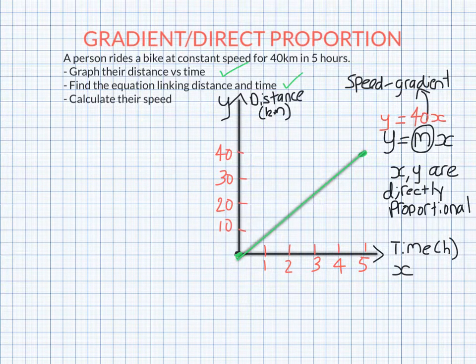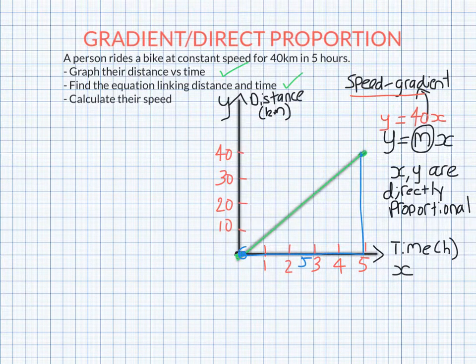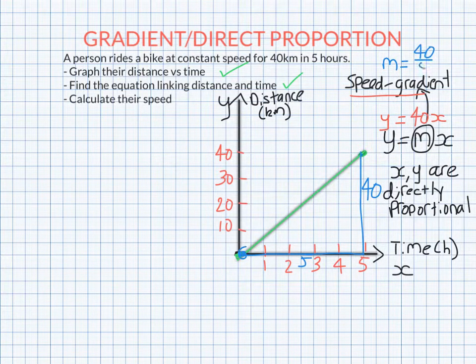And calculating their speed, well, I said before, speed is the gradient. The gradient here is rise over run. So to start from here and get to here, of course, the run is 5. We've gone from 0 to 5. And the rise is 40. So the gradient, which is the speed, is rise over run. 40 over 5 is 8. And of course, it was 40 kilometers in 5 hours, so the speed is 8 kilometers per hour.